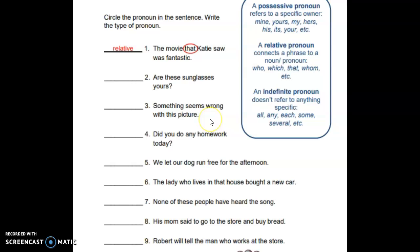Number four: 'Did you do any homework today?' Remember, a pronoun takes the place of a noun in the sentence. You have three different types, so in this sentence, 'any' would be the pronoun, and it would be an indefinite pronoun because it doesn't really refer to anything specifically.